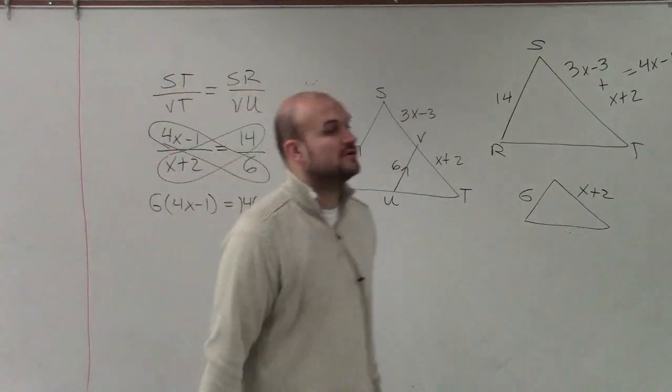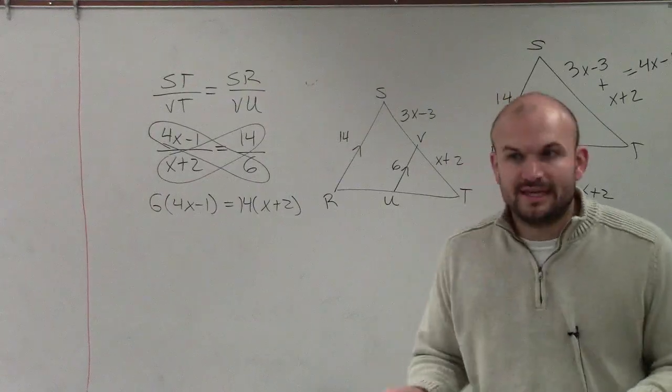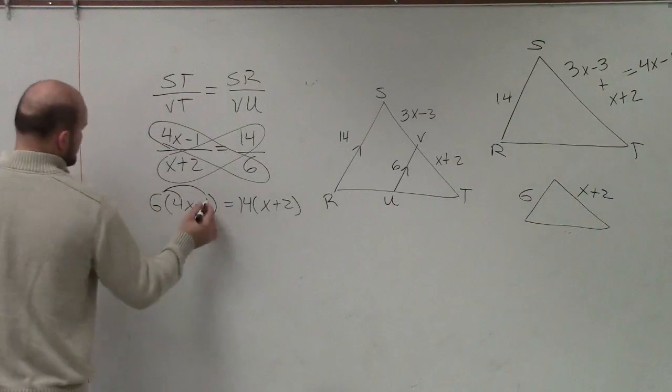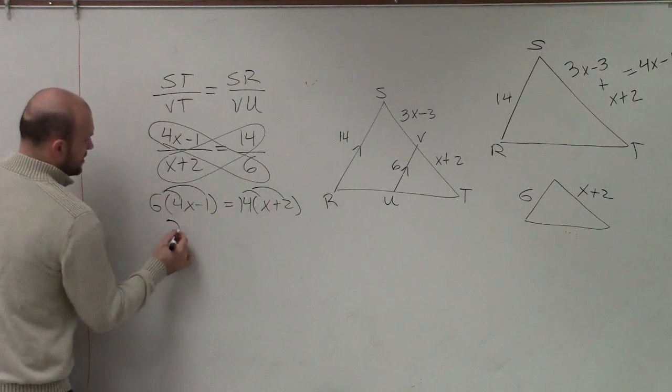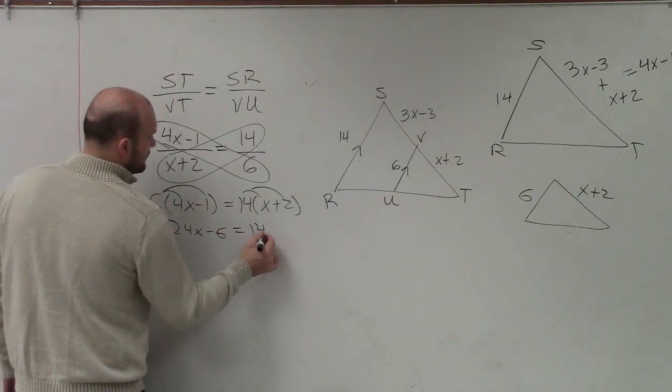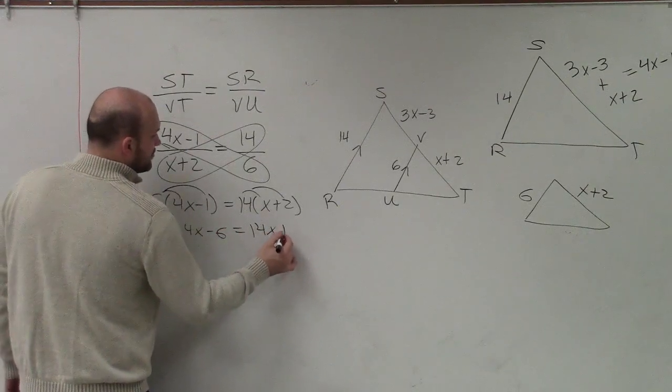So then I write 6 times 4x minus 1 equals 14 times x plus 2. Please remember, guys, whenever you're multiplying by a binomial, that you keep those parentheses, right? So then you make sure that you apply distributive property. So I have 24x minus 6 equals 14x plus 28.